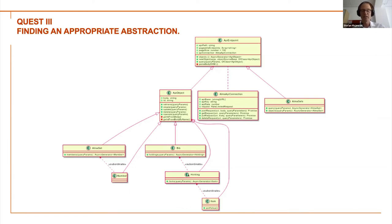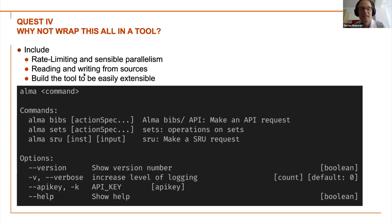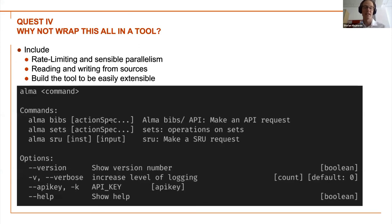Of course you can add more wrappers — like 'bib', 'holding', 'item' — where you have specific endpoints for listing holdings or items. You don't need to know or remember the exact specifications; the heavy lifting is in the API object. The quest for the last part of this presentation: why not wrap all this together? We have rate limiting, sensible parallelism, and reading and writing from sources. Building a tool that is easily extensible would be very nice. What we are building right now is an 'alma' command with a 'set' section specifying which endpoint we're working with, then multiple action specifications where retrieve, search, mutation, and putting back can happen.